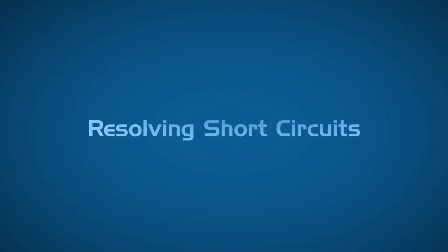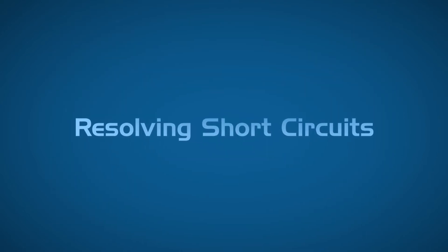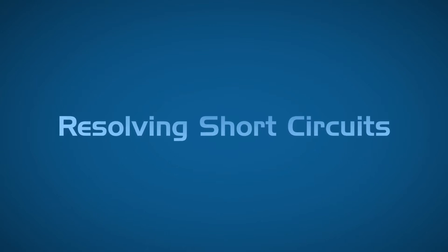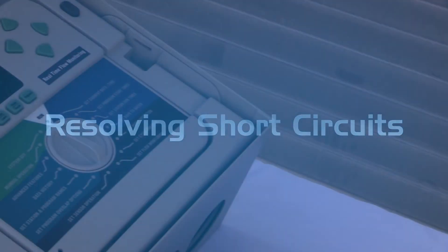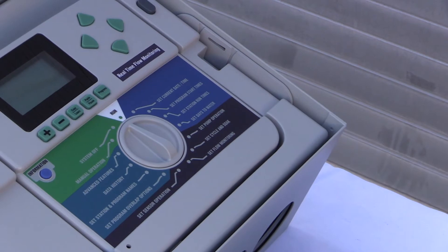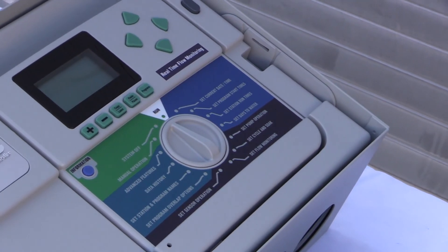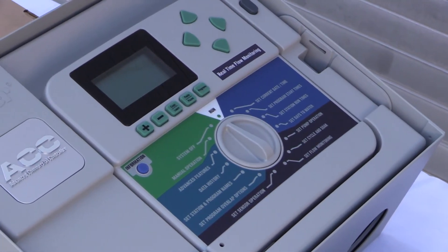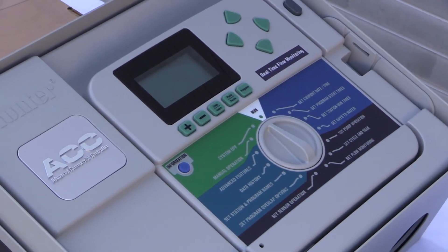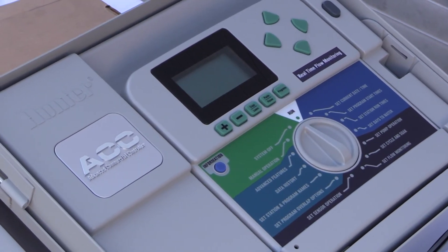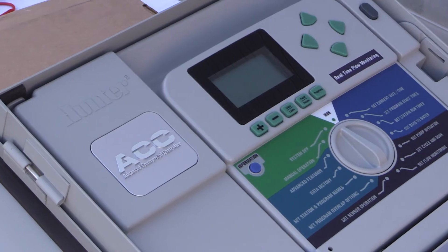Most controllers will display an alarm or otherwise go into short circuit mode when there is a short in the field wiring. When measured at the controller with a clamp meter on the main cable, a short circuit will display a dramatically higher than normal current flow. This can be caused by a bad decoder or unintended crossing of the two wires in the path.